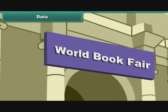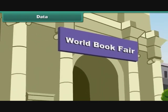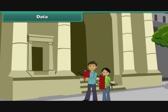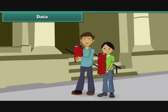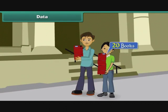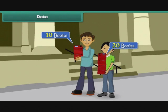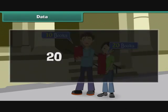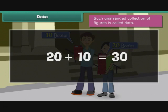Ravi and his father are returning home from the World Book Fair. Ravi has bought 20 books at the fair. His father has bought 10 books. In all, there are 30 books. The figures 20, 10 and 30 are unarranged. Such an unarranged collection of figures is called data.